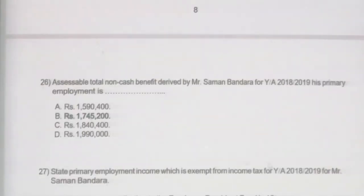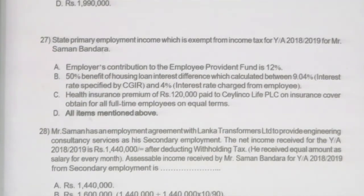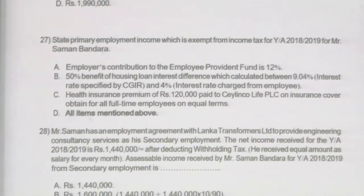Question 27 focuses on primary employment income exempt from tax. The employee's EPF contribution is approved by the Commissioner General and is therefore exempt. Fifty percent of the housing loan benefit is exempt — only 50 percent is liable to tax. Health insurance premium of 120,000 provided to all full-time employees on an equal basis is also exempt. Therefore, all three items mentioned — EPF contribution, 50 percent of housing loan benefit, and health insurance premium — should be taken as exempt benefits received by Mr. Bandara from employment income. The correct answer is all items mentioned above.